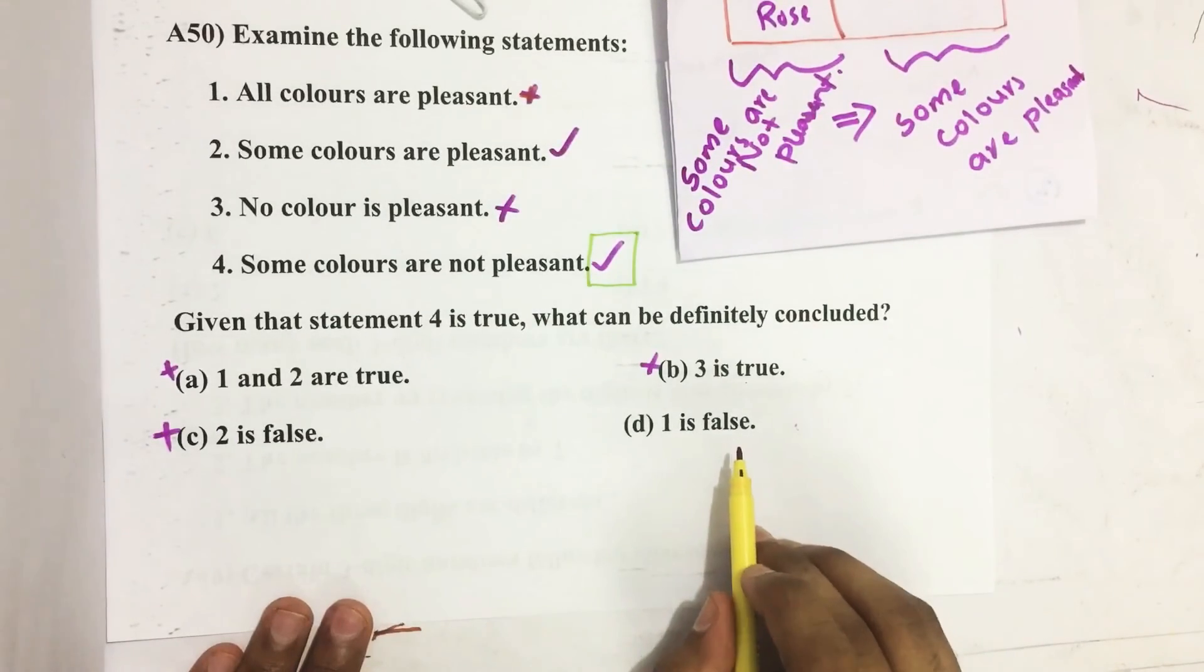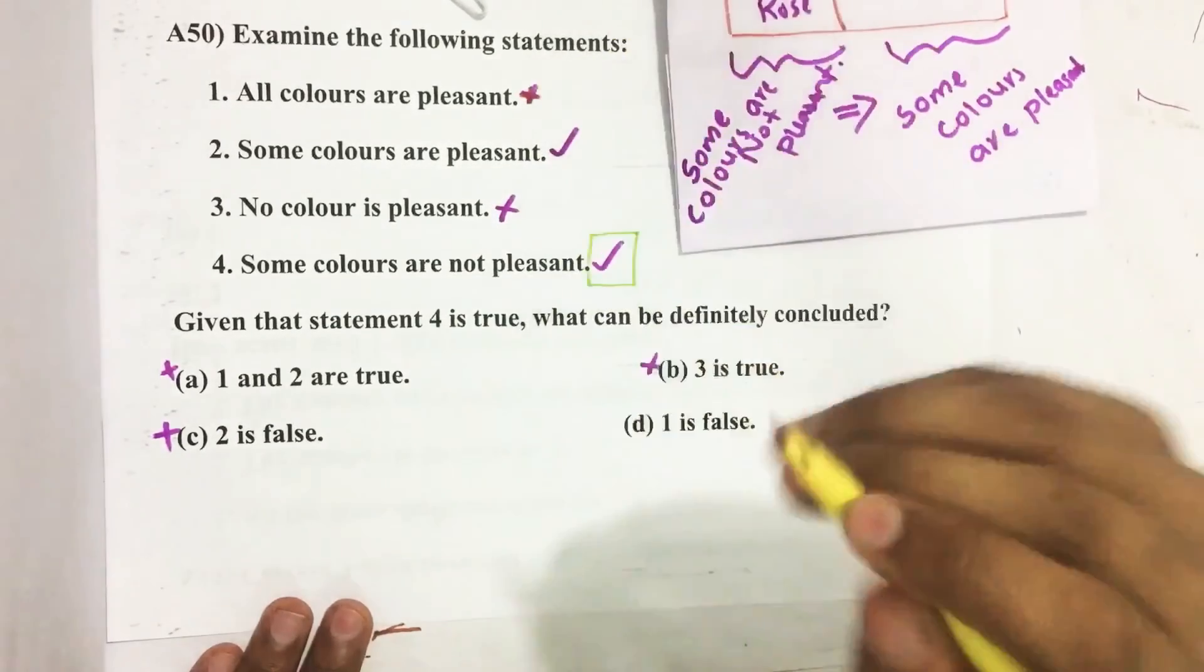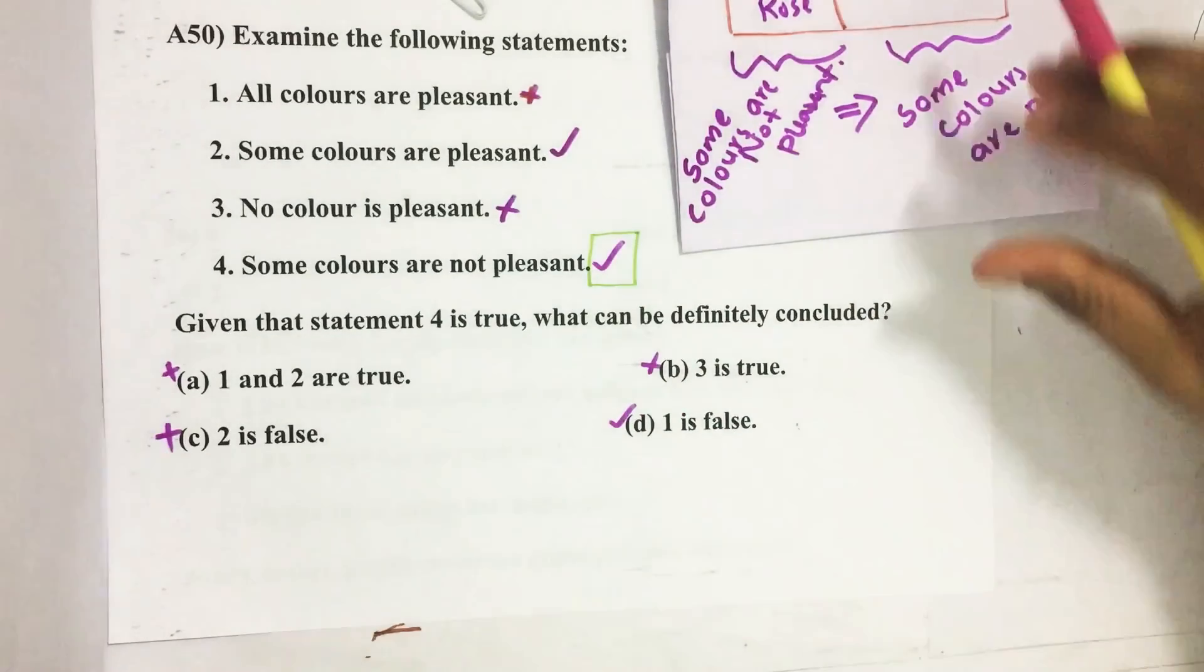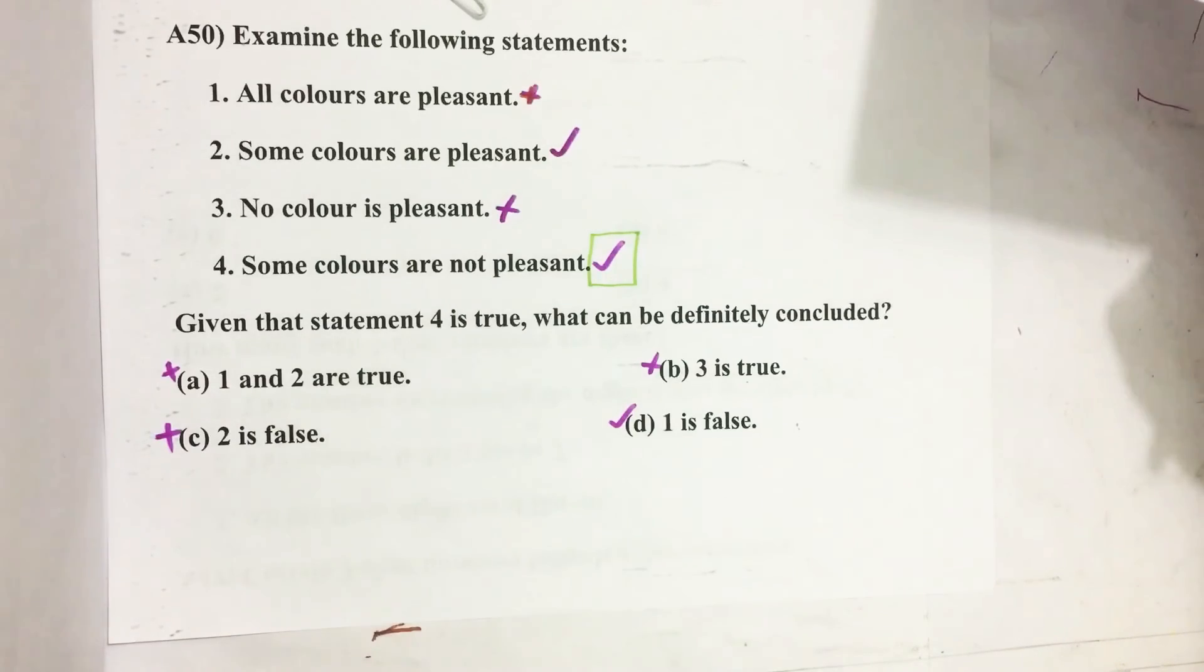(d) 1 is false? Yes, 1 is false, so this is our answer. Our answer is option D.